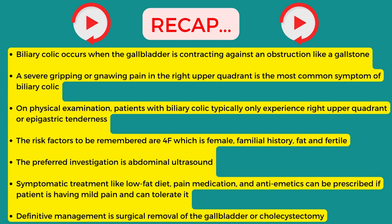To quickly recap: biliary colic occurs when the gallbladder contracts against an obstruction like a gallstone. The most common symptom is a severe gripping or gnawing pain in the right upper quadrant, which may radiate through the back, around the lower ribs, or to the epigastrium. On physical examination, patients typically only show right upper quadrant or epigastric tenderness. The risk factors are the 4Fs: female, familial history, fat, and fertile.